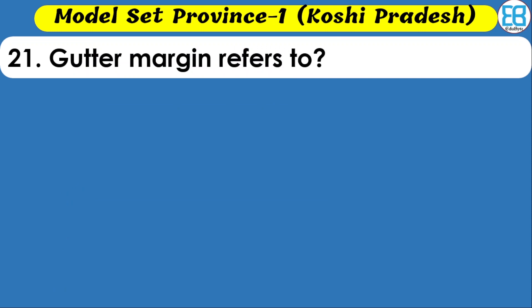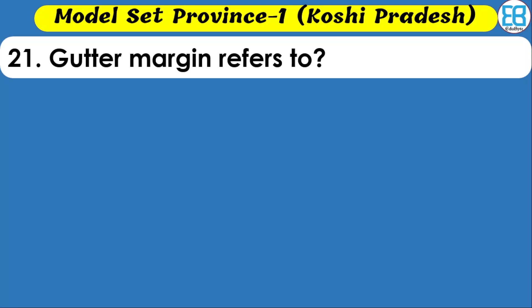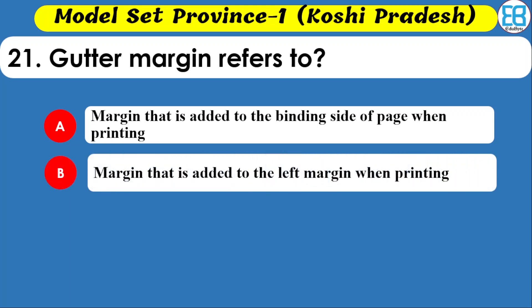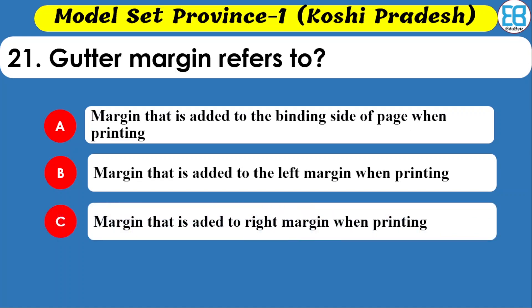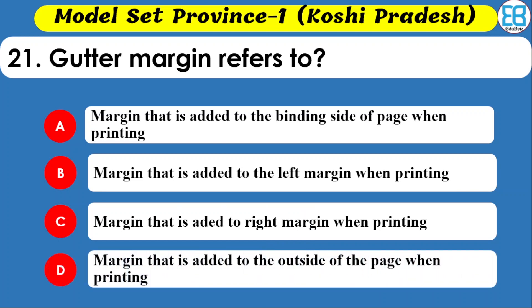Gutter margin refers to a margin that is added to the binding side of a page when printing. Options include margin added to the left, margin added to the right, and margin added to the outside of the page when printing. The correct option is the margin that is added to the binding side when printing.